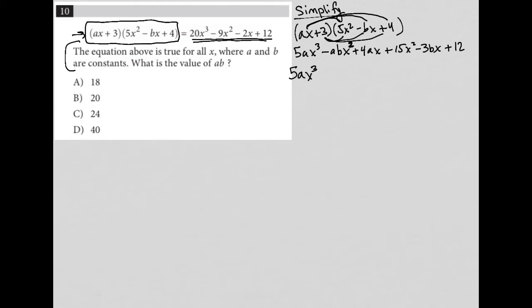I have two X squared terms, which I'll just write next to each other. So minus ABX squared plus 15 X squared. I have two X terms, which I'll also write next to each other. So plus four AX minus three BX. And then I have my plus 12.